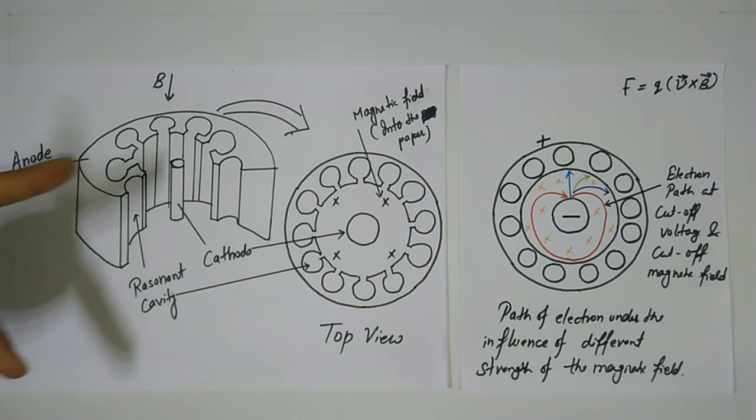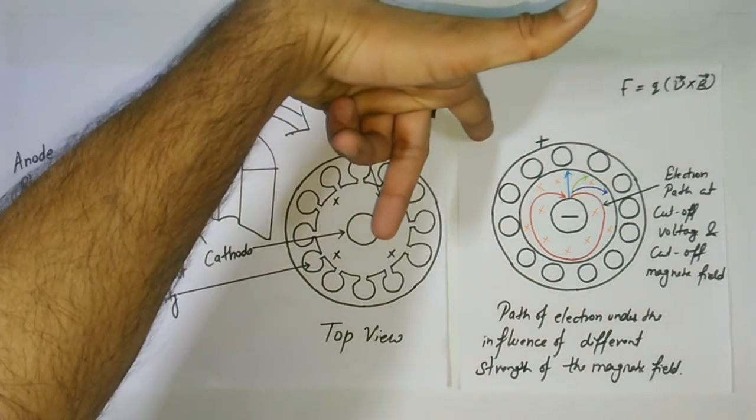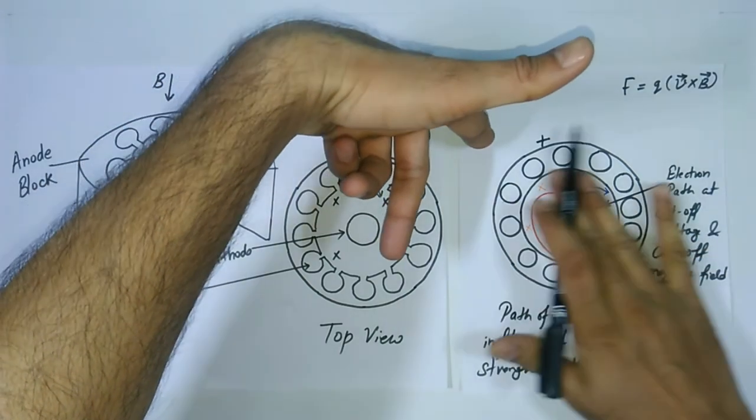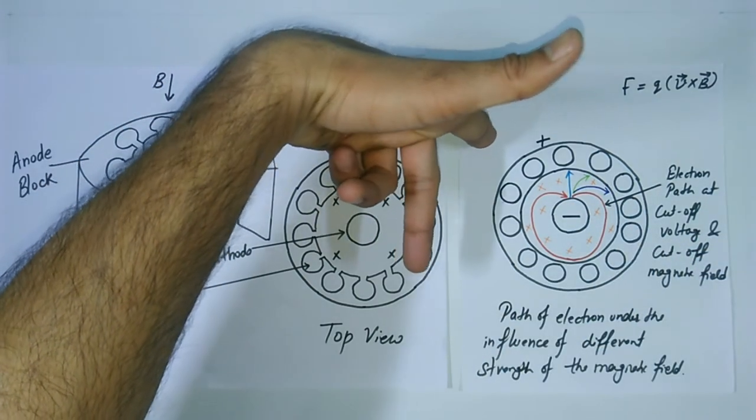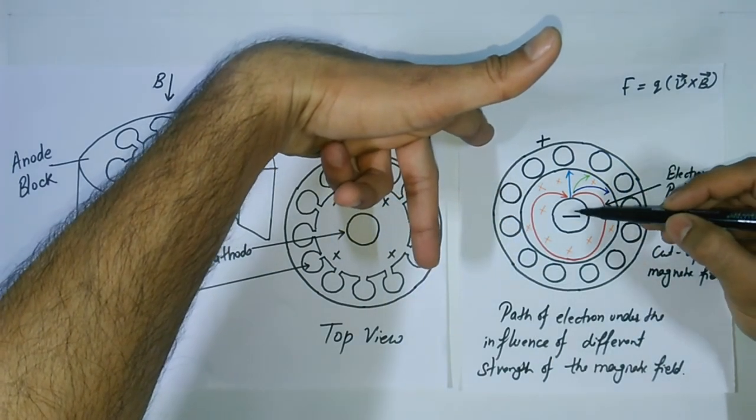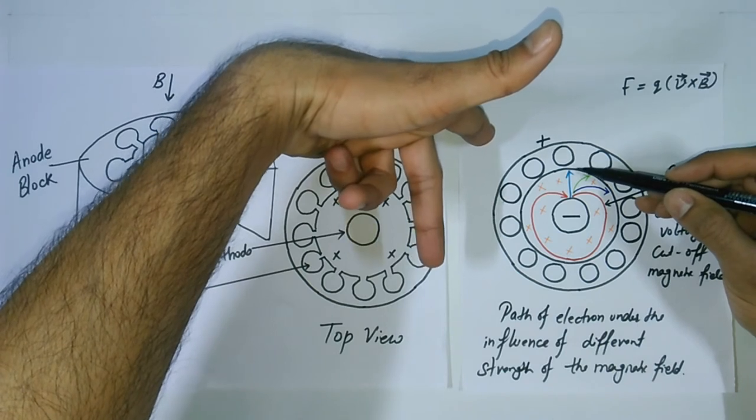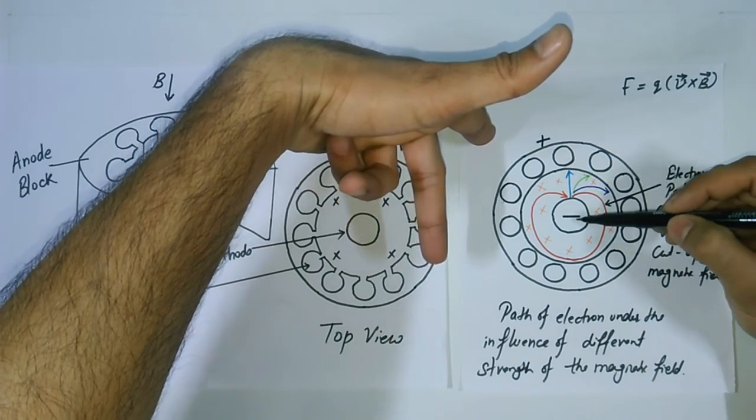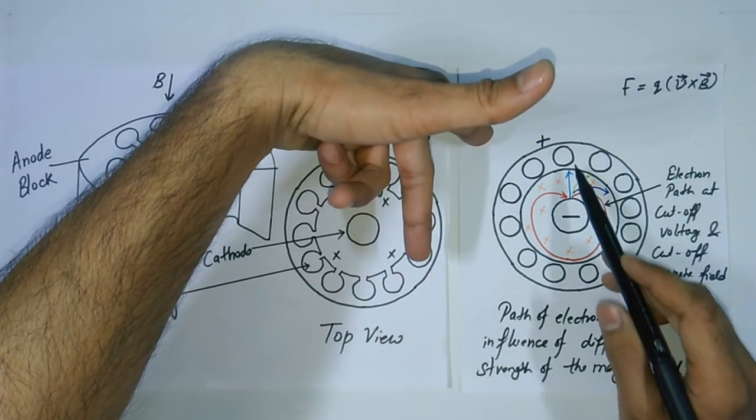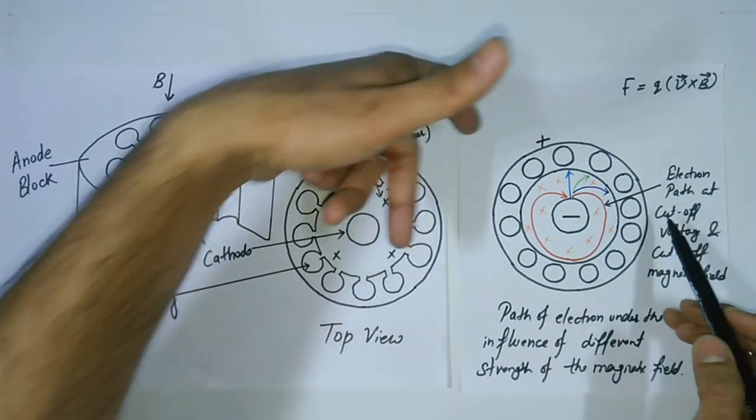Let us use Fleming's left hand rule. My first finger is in the direction of applied magnetic field which is perpendicular to the plane of anode block. And my second finger is in the direction of conventional current. As the electrons are moving from cathode to anode, so positive charge is moving from anode to cathode. So the thumb indicates that these electrons while going from cathode to anode will be deflected towards the right.